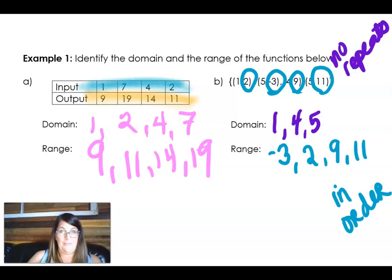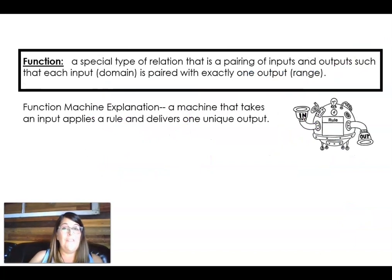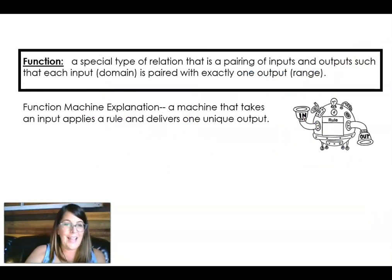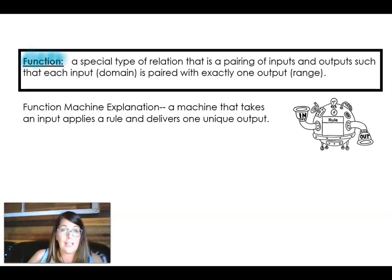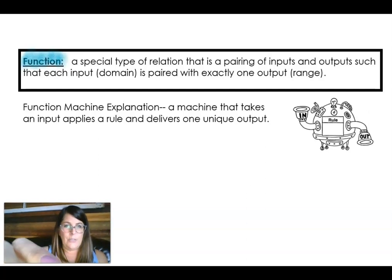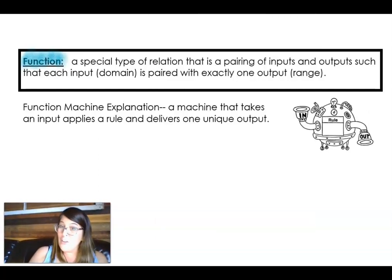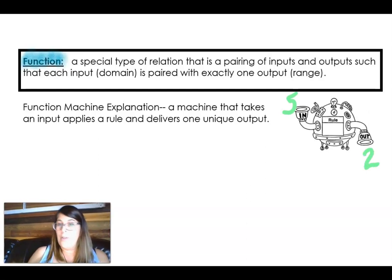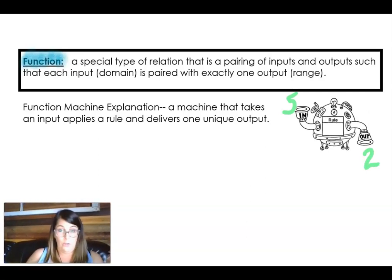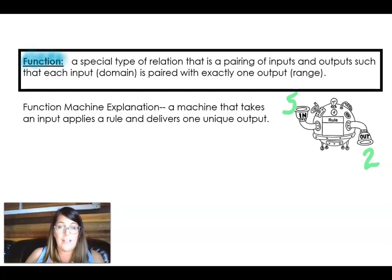So all of this is leading up to a function. This is what we're going to talk about all day. So a function is a special kind of a relation. It's a special relation where every input has a unique output. The inputs and the outputs, when they get paired together, the domain is paired with exactly one range value. So let me try to explain this in terms of a machine.